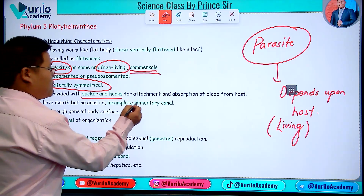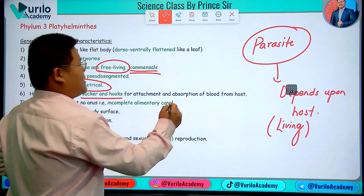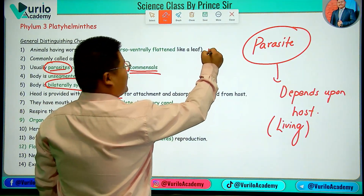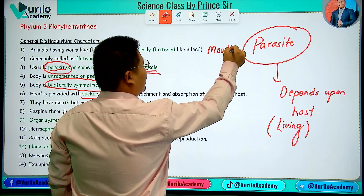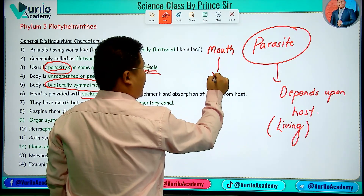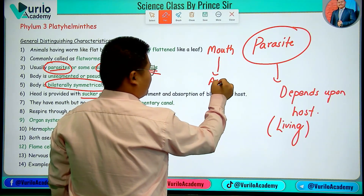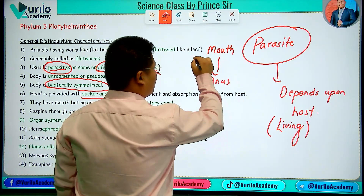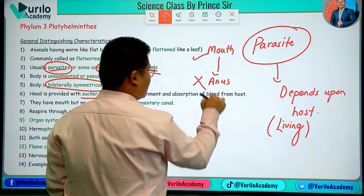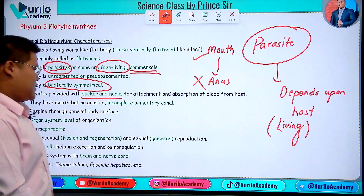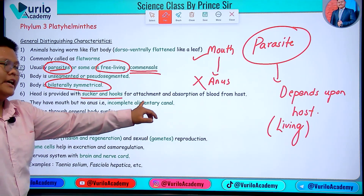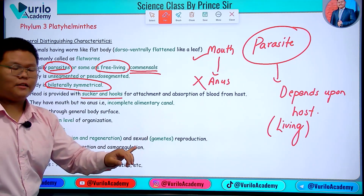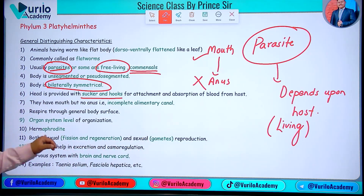What is a Complete Alimentary Canal? A complete alimentary canal is when the mouth opens and ends at the anus. However, in Platyhelminthes, mouth is present but anus is absent — so it is an incomplete alimentary canal.